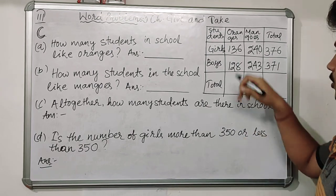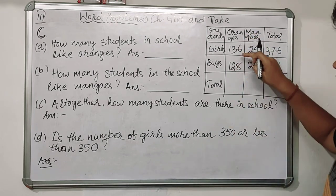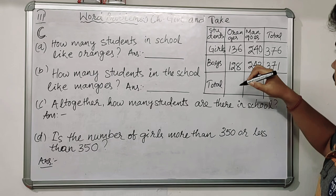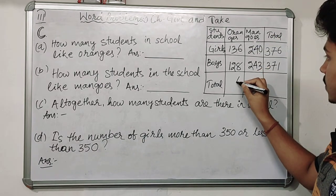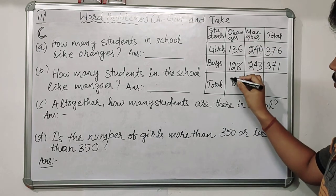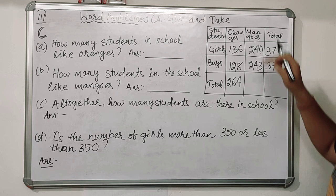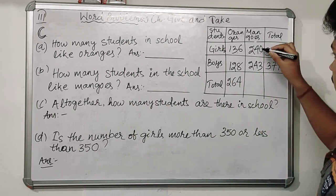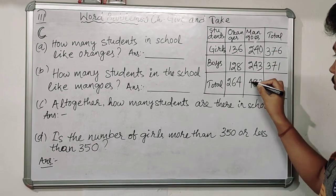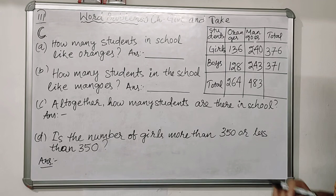Now let us find out how many girls and boys like oranges. We add 136 plus 128: six plus eight is 14, carry 1; three plus two plus one is six; one plus one is two — so 264. Now how many girls and boys like mangoes: three plus zero is three, four plus four is eight, two plus two is four — so 483.